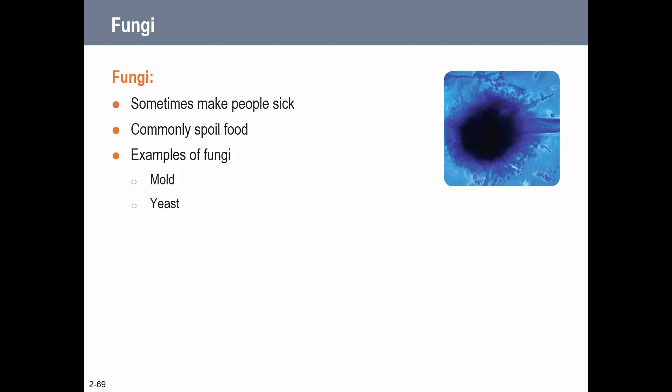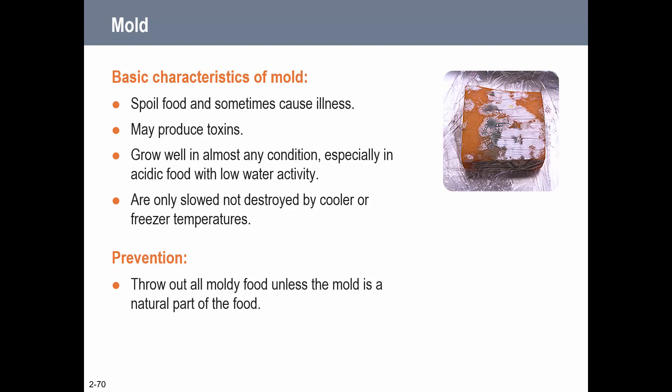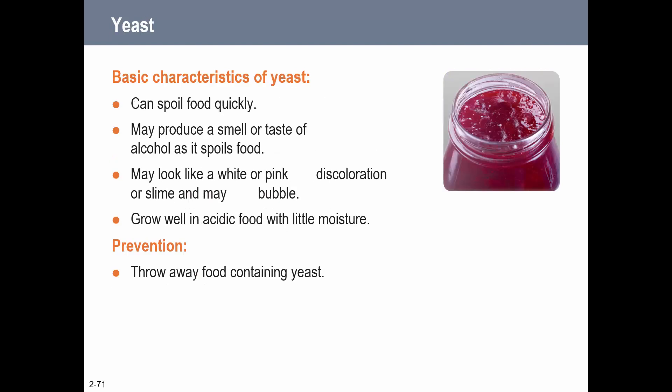Fungi is the last category. Sometimes they make you sick, sometimes we eat them - like blue cheese and mushrooms. They can spoil food; mold and yeast are two examples. Fungi may produce toxins, can grow well in most conditions, and do well in acidic food with low water activity. They're slowed by freezer and cooler temperatures but not necessarily destroyed. Be careful with mold - sometimes you can't just cut it off, since mold can create spores that spread even to parts you don't visibly see. Yeast can also spoil food quickly, producing an alcohol or fermentation smell.